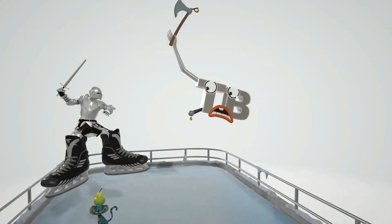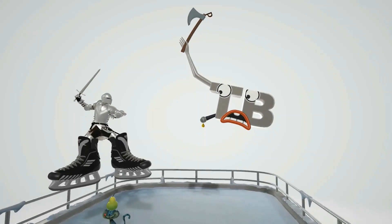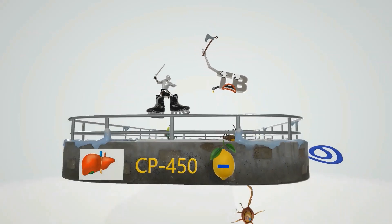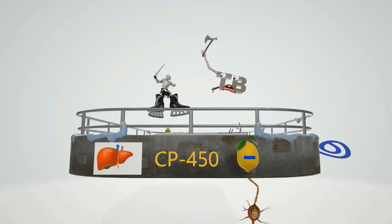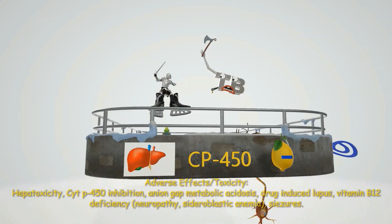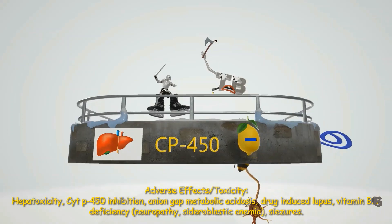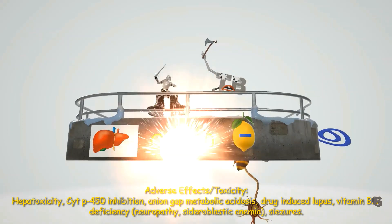Now let's talk about adverse effects and toxicities, because there are a lot of them associated with isoniazid. Looking at the ads on the side of the ice skating rink: first, we see a liver that's exploding, which reminds us of hepatotoxicity — a well-known side effect that can range from abnormal liver function tests to hepatitis.